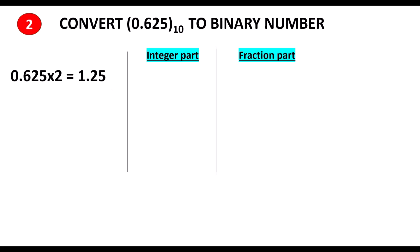Here the 1 is the integer part and 0.25 is the fraction part. We write the integer part separately and the fraction part separately. Again, we take the fraction part 0.25 and multiply by 2, so we get 0.5. Here 0 is the integer part and 0.5 is the fraction part.